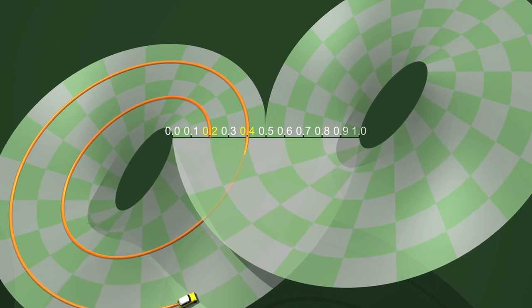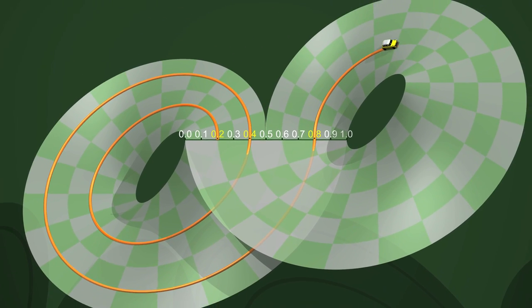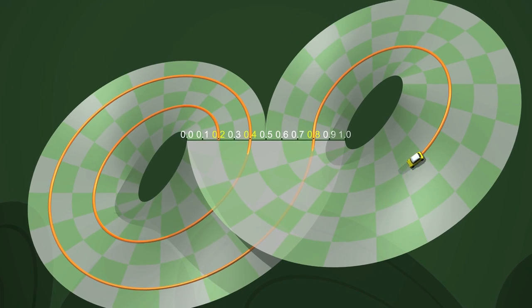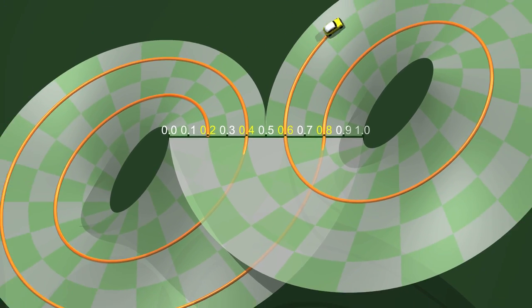From here, a new path starts. Our position on the starting line is given by a number x between 0 and 1. At 0, we are on the left. At 1 half, we are in the middle. And at 1, we are on the right.